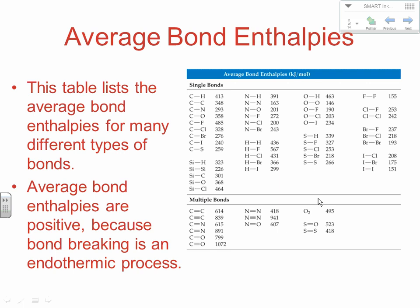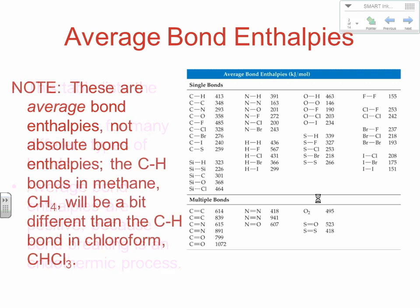Technically, all of these bond enthalpies for single and multiple bonds would be positive values, because we're talking about how much energy it takes to break a mole of those bonds. These are average bond enthalpies, not absolute bond enthalpies. For example, C-H in methane versus C-H in CHCl3 — because different things are inside the molecule, the actual energy to break the bond varies. So the C-H value in the table is an average for the different types of C-H bonds that exist across different compounds.